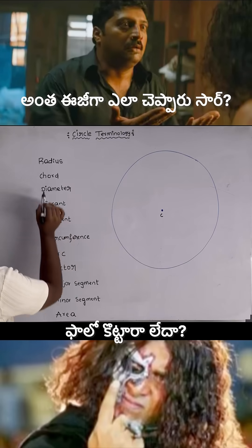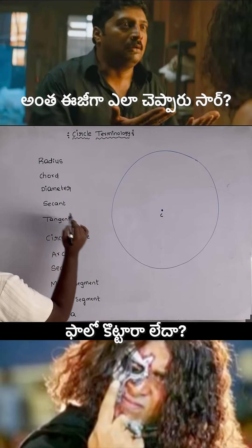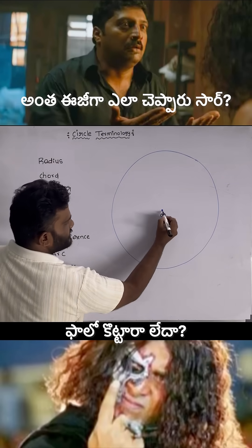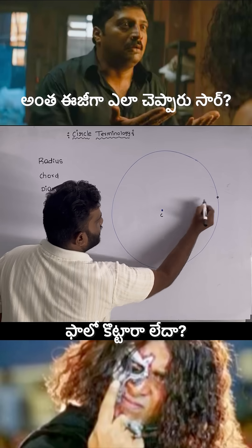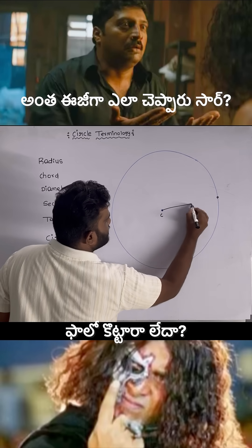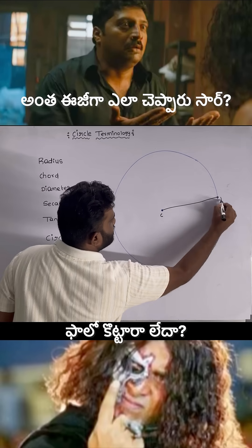Circle terminology: radius — the distance between the center and any point on the circle. This distance is known as radius.